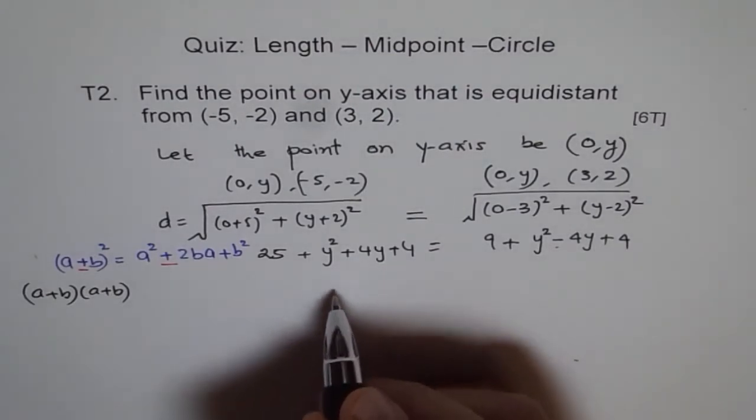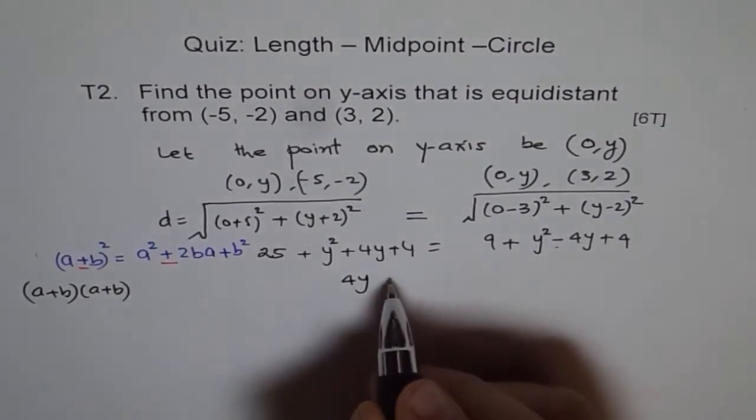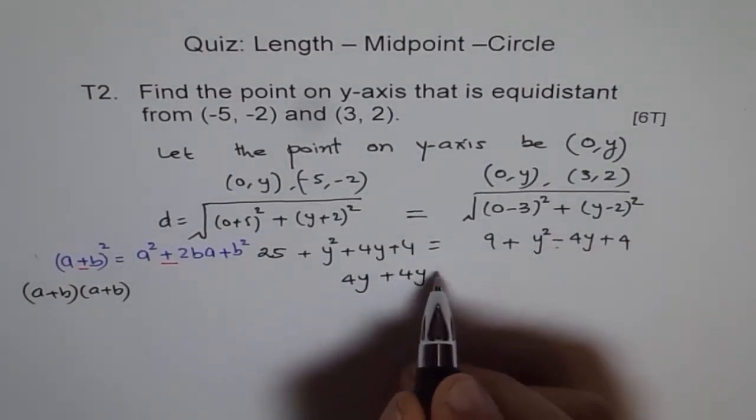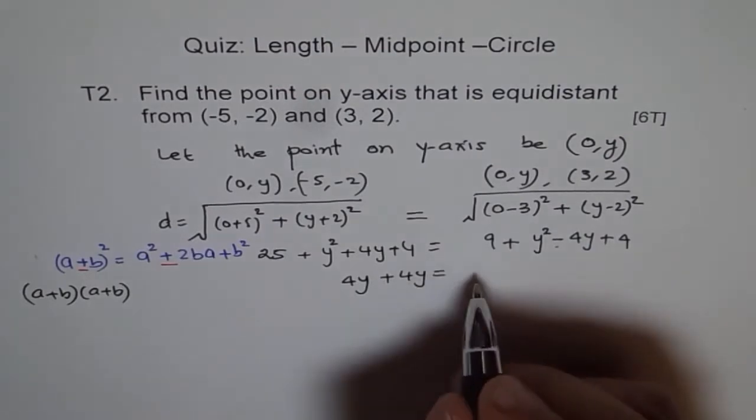So we are left with 4y, and this minus 4y comes to this side, it becomes plus 4y, equals to the numbers. Here we'll add 9 plus 4 is 13, and 25 plus 4 is 29, so we'll bring here minus 29.